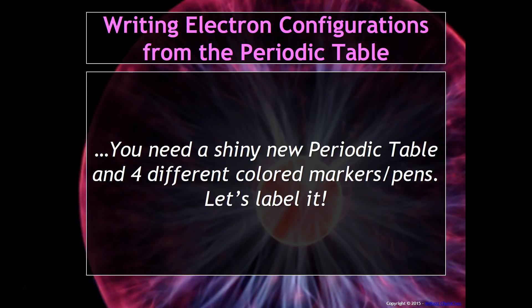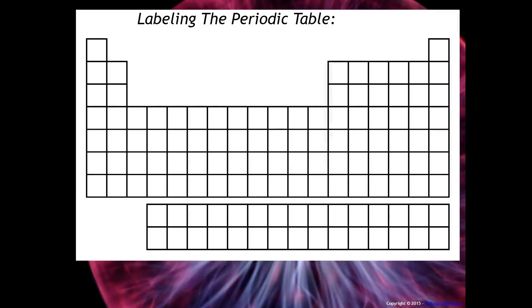In order to do this you will need a brand new shiny periodic table and four different colored markers. What we would do in class is label it together, so here's your periodic table. The first thing you want to do is select a colored pen — it's up to you.